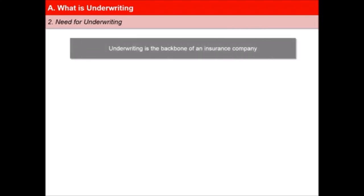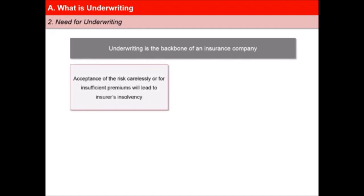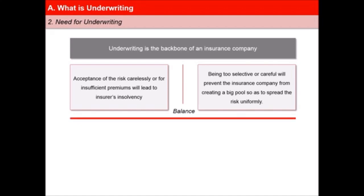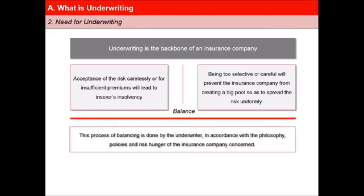Underwriting is the backbone of an insurance company. A careless acceptance of the risk and insufficient premiums will lead to insurers' insolvency. On the other hand, being too selective or careful will prevent the insurance company from creating a big pool so as to spread the risk uniformly. It is therefore critical to strike the correct balance between risk and business, thereby being competitive and yet profitable for the organisation. This process of balancing is done by the underwriter in accordance with the philosophy, policies and risk hunger of the insurance company concerned.